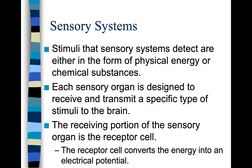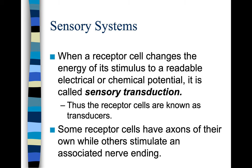Stimuli that sensory systems detect are either in the form of physical energy or chemical substances. Each sensory organ is designed to receive and transmit a specific type of stimuli to the brain. The receiving portion is the receptor cell, which converts the energy into an electrical potential. When a receptor cell changes the energy of its stimulus to a readable electrical or chemical potential, it is called sensory transduction. Thus, the receptor cells are known as transducers.